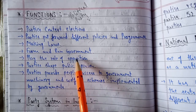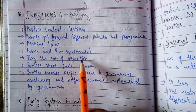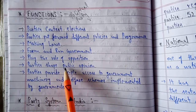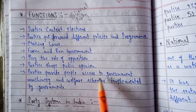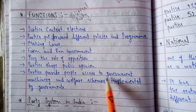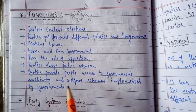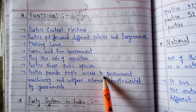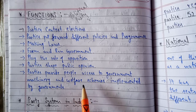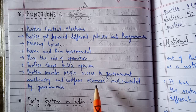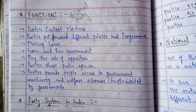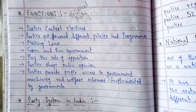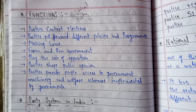Parties shape public opinion through their different ideologies. Parties also provide people access to government machinery — it is through parties that people are able to access and get benefits of government plans, policies, and welfare schemes such as subsidies, ration shops, and the Public Distribution System. Implementing various laws of the government is also done by political parties, giving them a very vital role in the functioning of government.